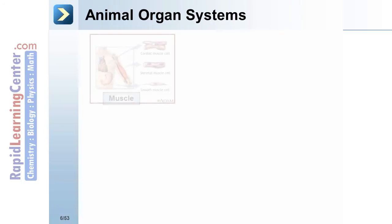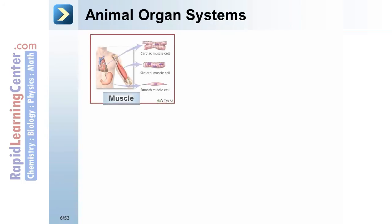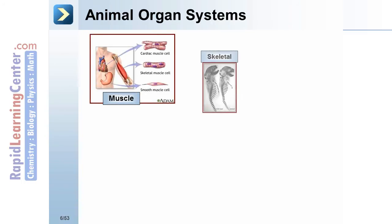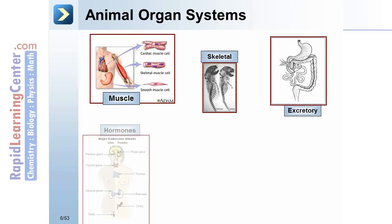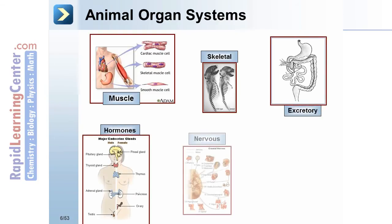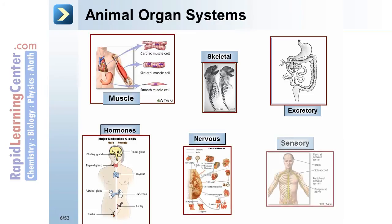Animal organ systems. Animal organ systems include the muscles, skeletal, excretory, hormones, nervous system, and sensory systems.